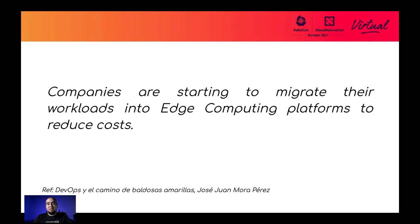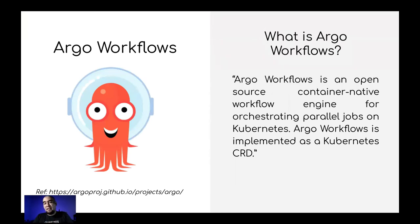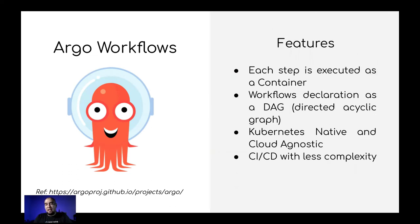ARM architecture is commonly used in edge computing, and companies are migrating to edge computing to reduce costs. Argo is a piece of software to create automation and pipelines, designed to run on Kubernetes. You can execute steps inside containers, define your workflow or DAG in a YAML file with a simple directed acyclic graph syntax. Argo is Kubernetes-native and cloud-agnostic, and you can use Argo workflows for things beyond machine learning, including regular CI/CD with less complexity.